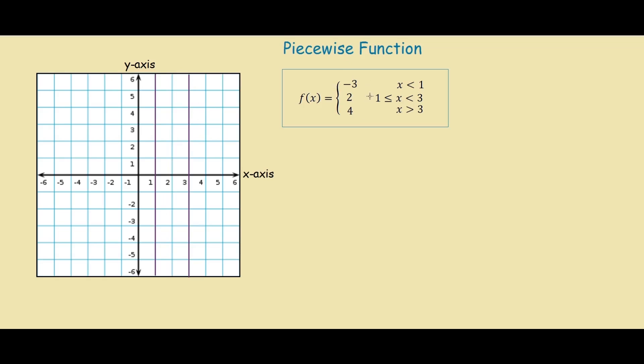Now to look at the actual function, we have f of x equals negative 3, which is the same thing as saying y equals negative 3. So at y equals negative 3, we have the line that looks like this.